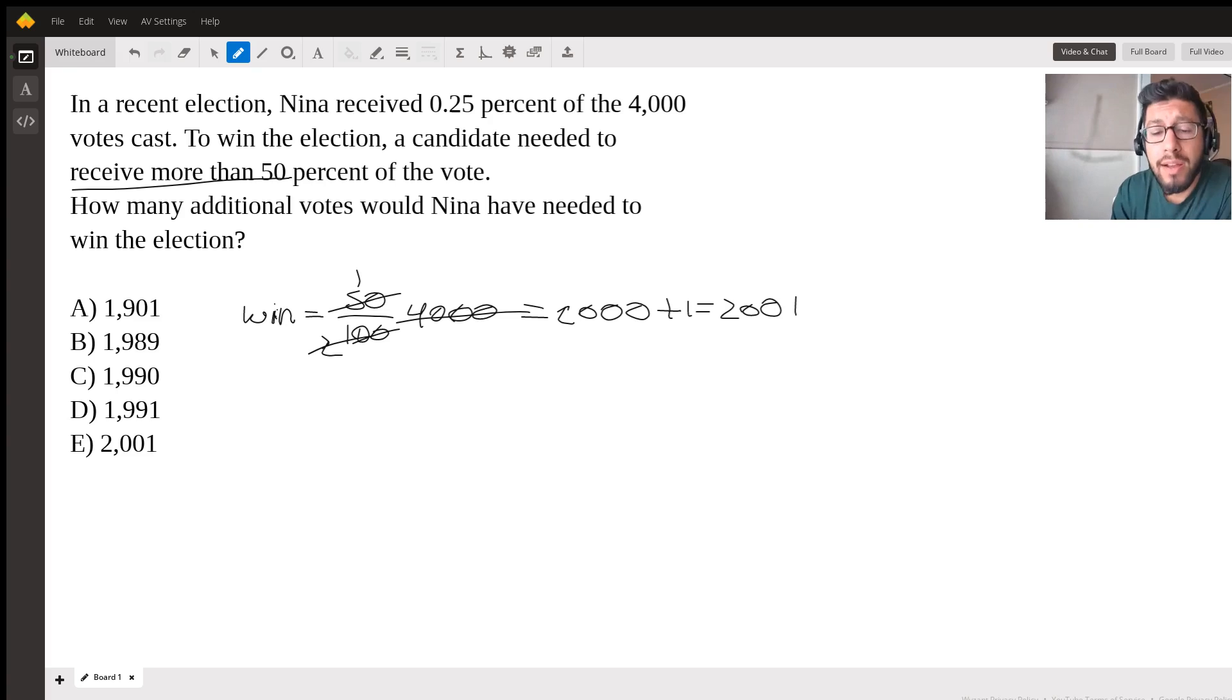Okay, so how many has Nina received? And then if we calculate the difference, then we'll be able to know how many she will have needed in order to win. So she has won so far 0.25% of the 4,000.